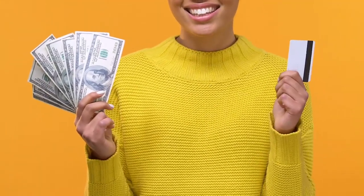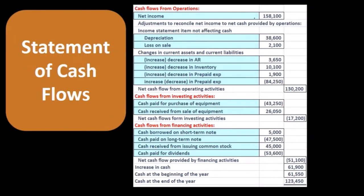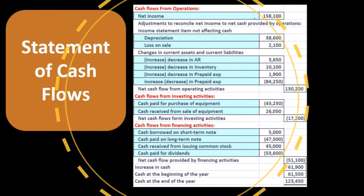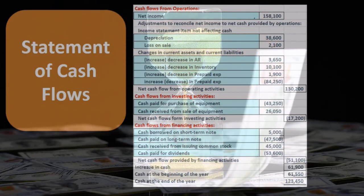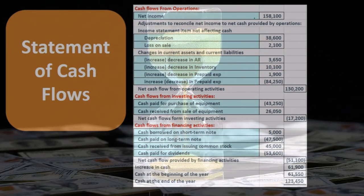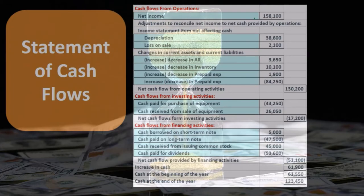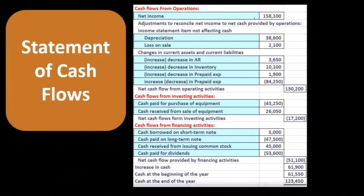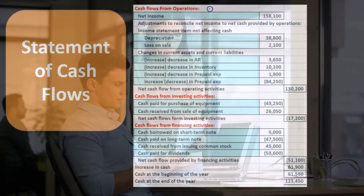It also shows the difference between cash flows from an accrual basis — in terms of net income — and from a cash basis, which is useful to see. Additionally, some regulations require that the indirect method be used even if the direct method is also used, so the indirect method is often required due to that regulatory requirement. The difference between the two methods has to do with the cash flows from operating activities.